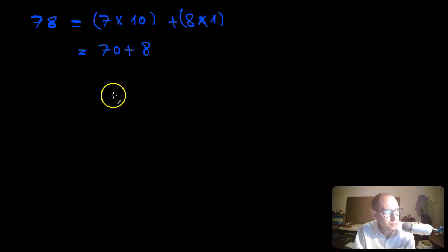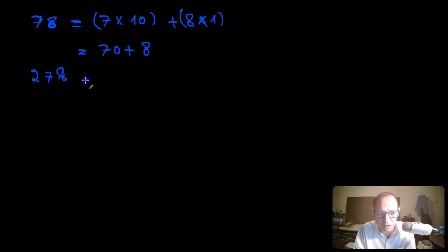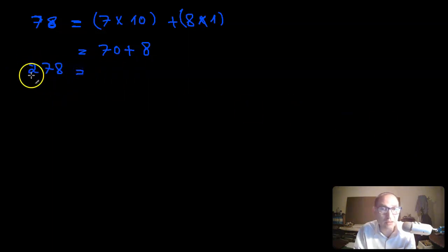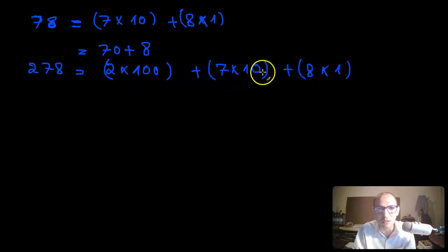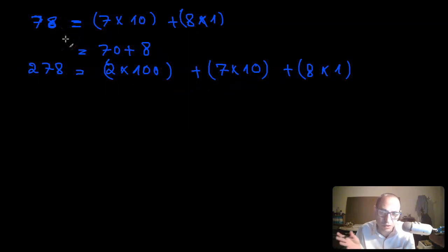For a three-digit number, for example 278, it's the exact same idea except there are also bags of 100. So 278 expands as 2 times 100, plus 7 times 10, plus 8 times 1. That's essentially the expansion of a three-digit number.